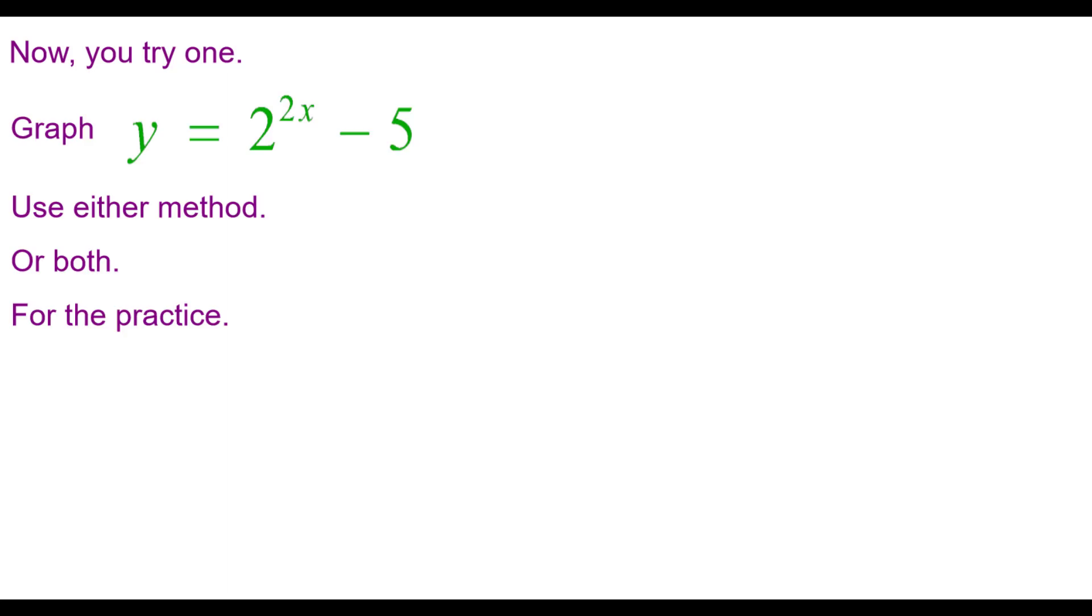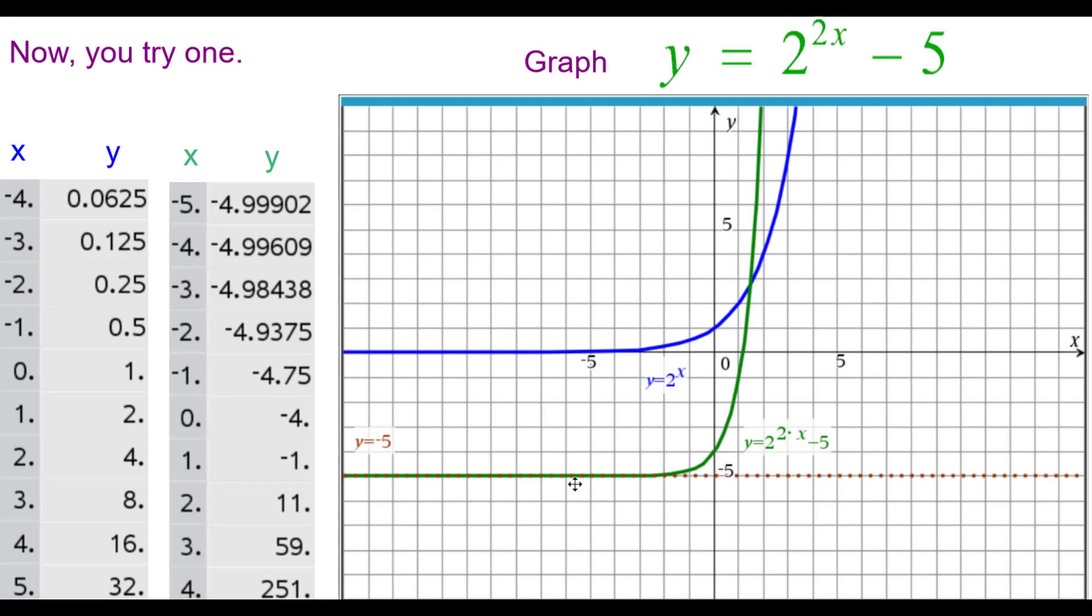Now you try one. Graph y equals 2 to the 2x power minus 5. Use either method or both for the practice. Press pause to do this and resume when you're finished to check your answer. And here's your answer in green, the graph and the table.